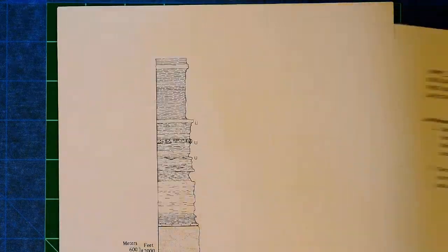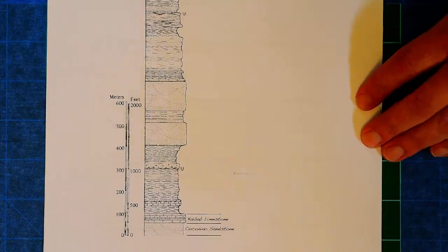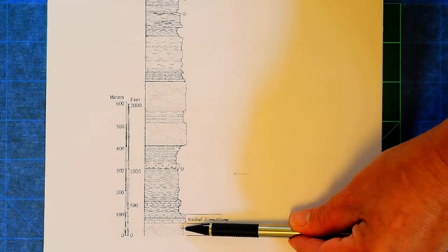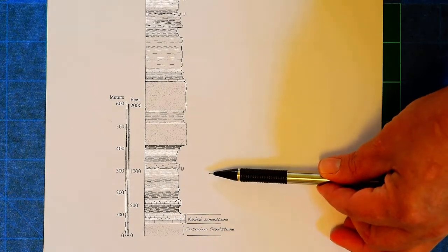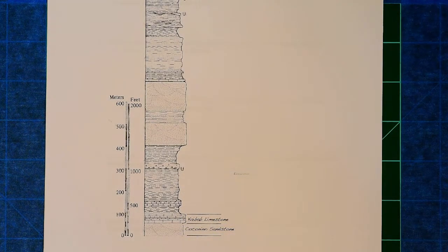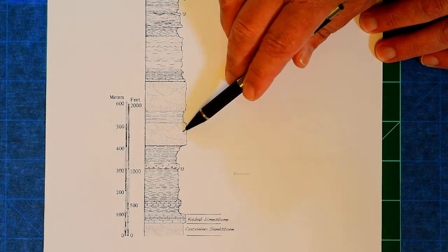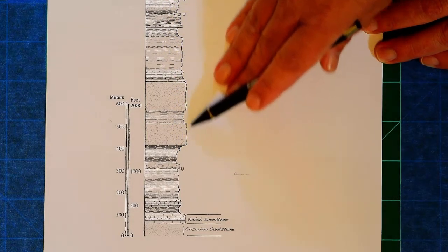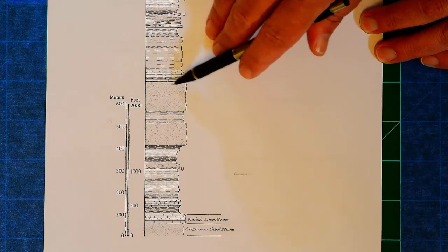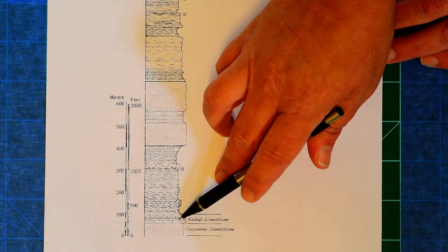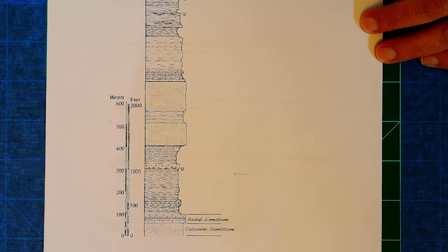When you're given this, we have this stratigraphic section, and down here there's some examples where they've already broken out some of the rock formations. And that's really what you're going to do. You're going to look at this, look at the rock types that are shown. All of these symbols are standard, like these dots that look like this mean a cross bedded sandstone. The bricks that you see, that means limestone.